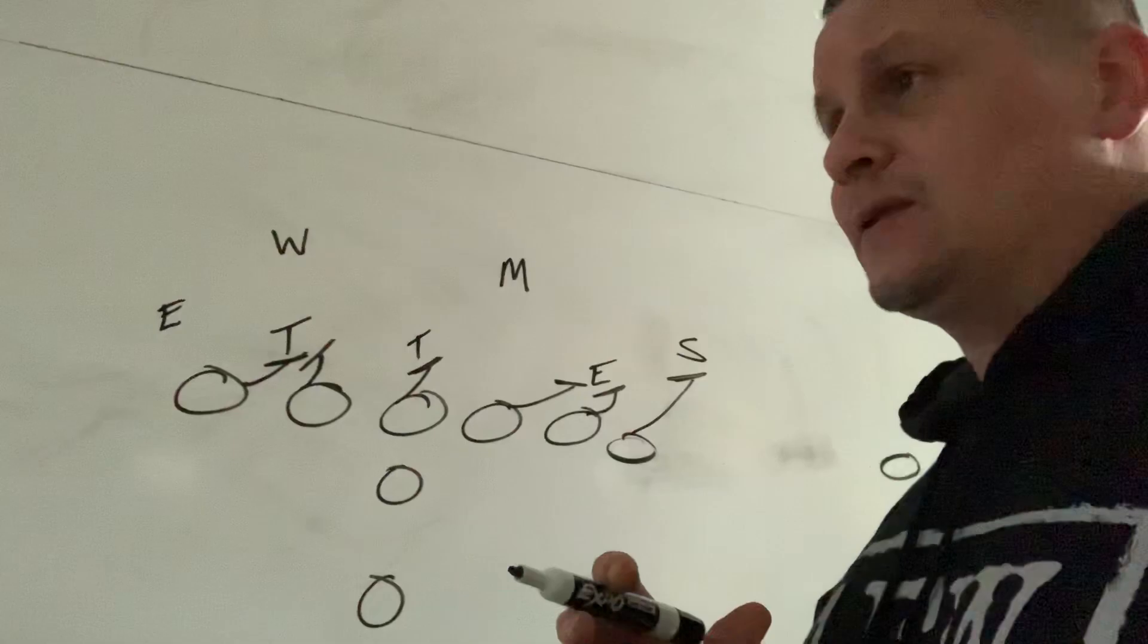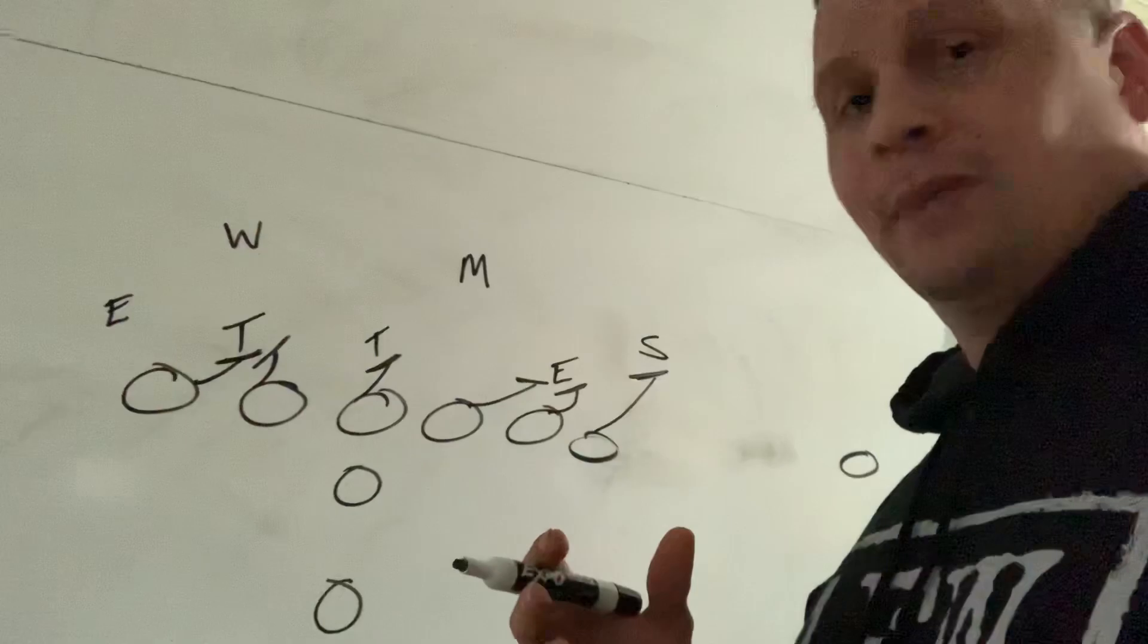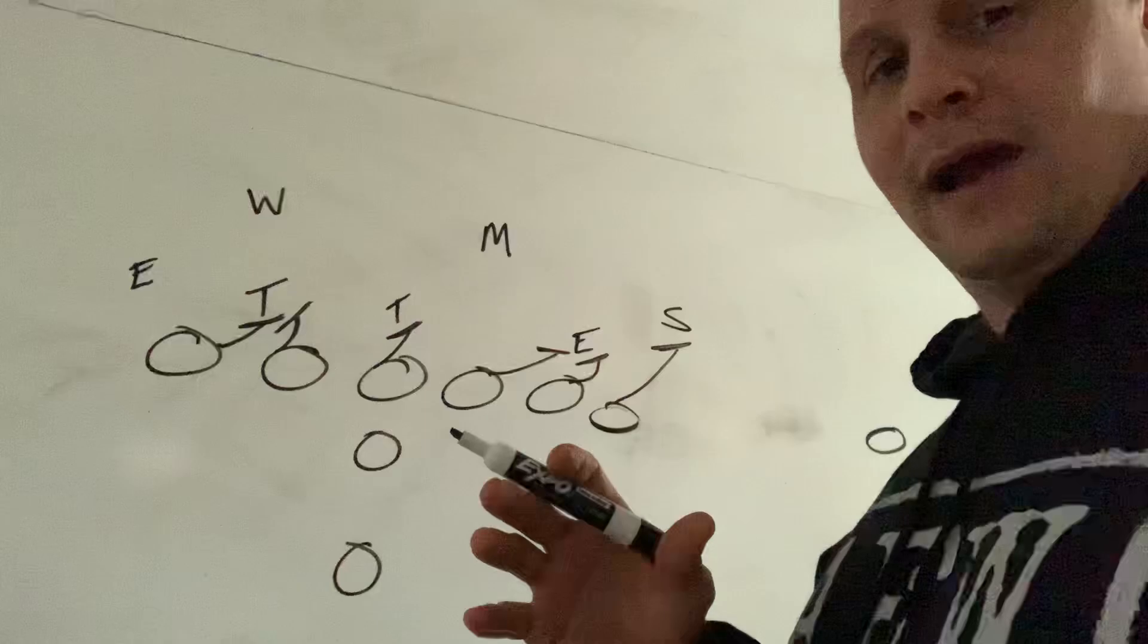Gary Kubiak over the years has utilized the zone blocking technique. It is a method of run blocking that is extremely effective if you have slightly undersized linemen. You don't have to be road graders. You have to be able to move around and be a little fleet on your feet.